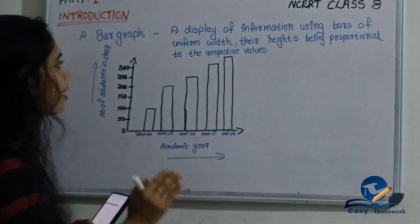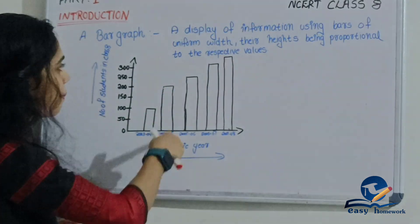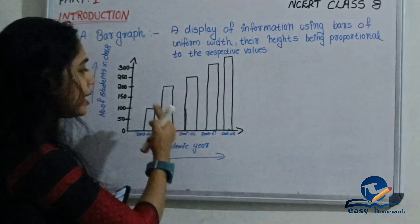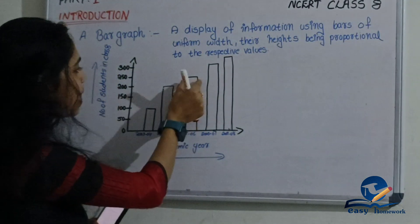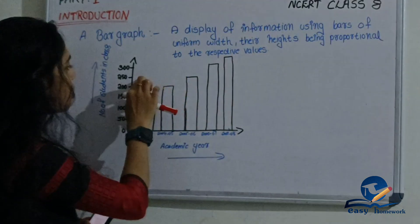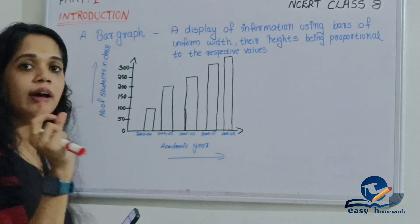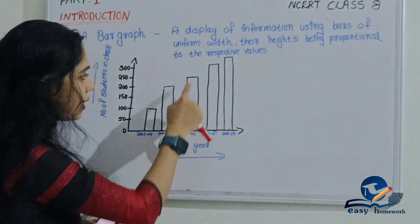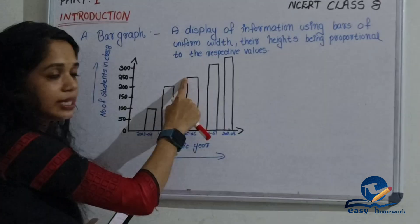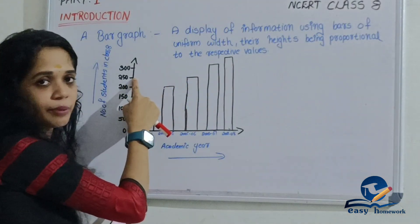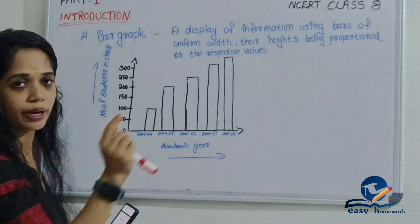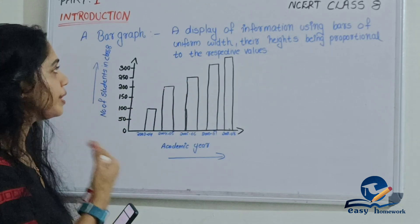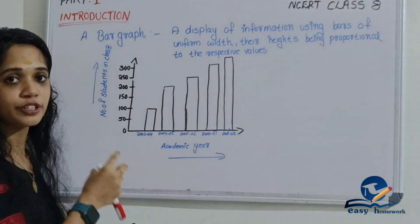We are going to study the bar graph using uniform bars. In a bar graph, the height of the y-axis represents the proportional value of the data. The display of information uses bars of uniform width, and the height of each bar corresponds to its value.